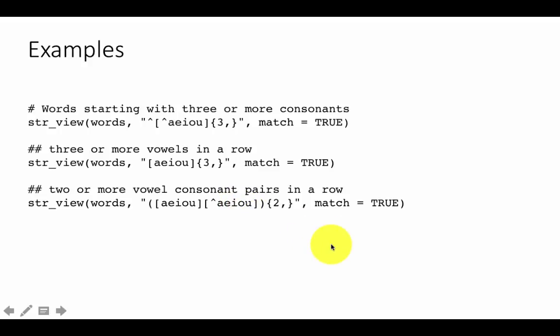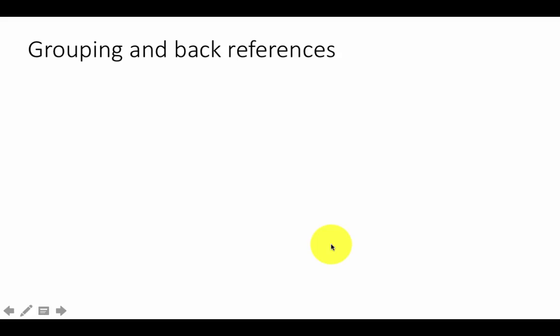So we've looked at grouping. Let's see where else grouping might be useful. Grouping is very useful when you're talking about back references. By back references, what we mean is you've created some pattern at some part, and in some later part of the pattern, you want to refer to this older one. Let's take an example.